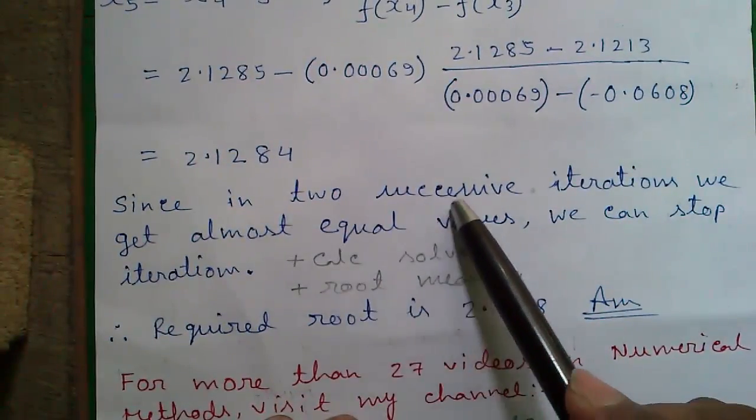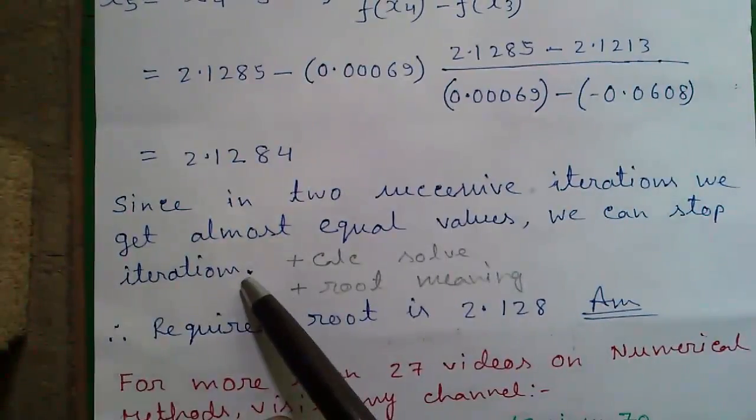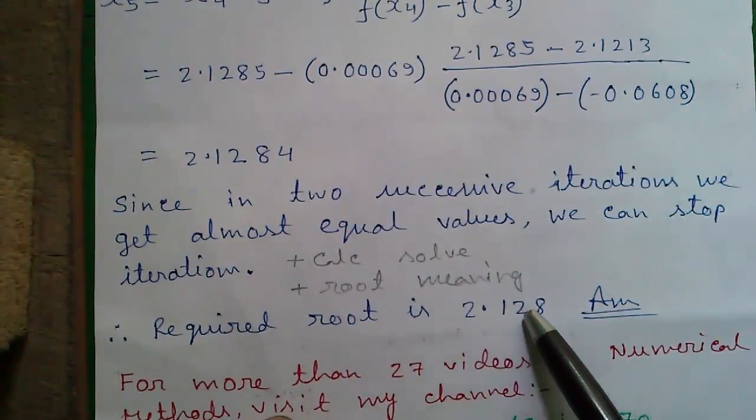So since in 2 successive iterations we got almost equal to values we can stop iteration. So the required root is 2.128.